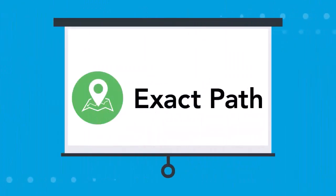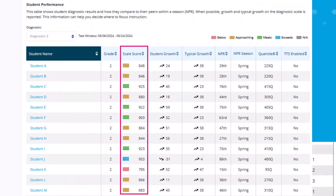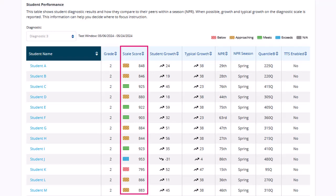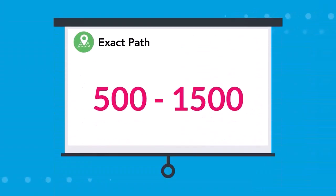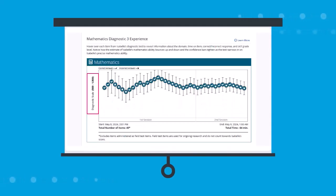Edmentum Exact Path, our K-12 program that combines adaptive diagnostic assessments with individualized learning paths, uses scale scores. In this program, after a student completes their diagnostic assessment, they receive a scale score. The range of this scale is from 500 to 1500, and you'll find it in a series of our diagnostic reports.